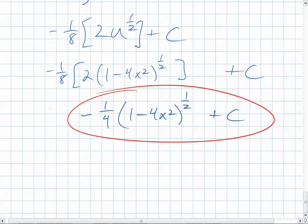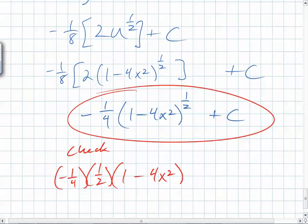What do we have to drop to the front? The 1 half. So what do we end up with? Let's check. We end up with negative 1 fourth times 1 half times 1 minus 4x squared, all raised to the negative 1 half. And then what do we kick out? Because we have to use the chain rule. Negative 8x.